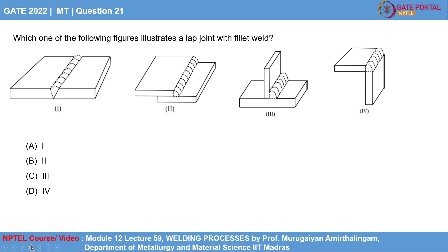Looking at figure one, there are two plates with a V-groove inside. This groove is known as a bevel, and it can be of many types — V type, K type, or double V type. This arrangement is generally used when the plate thickness is perpendicular to the weld centerline, and it is known as a butt joint with V-groove.